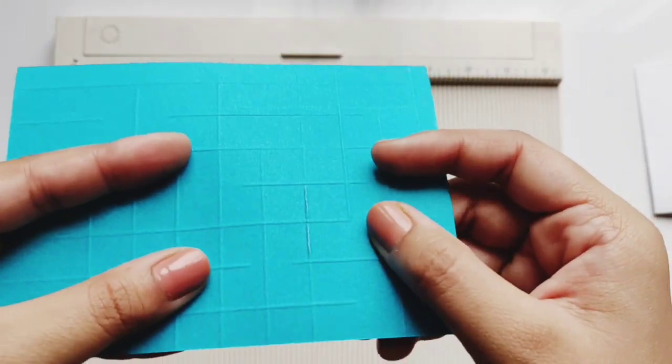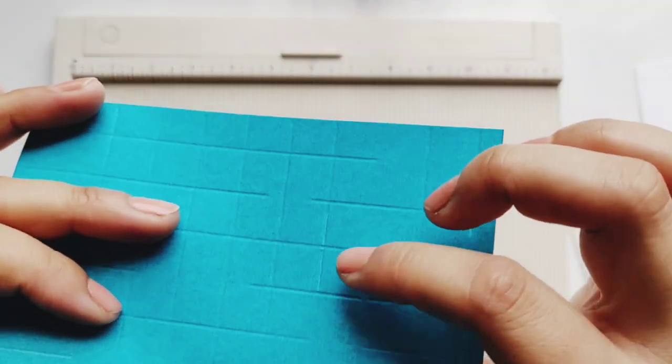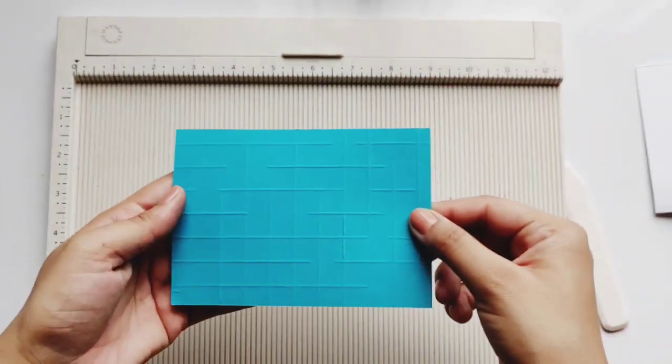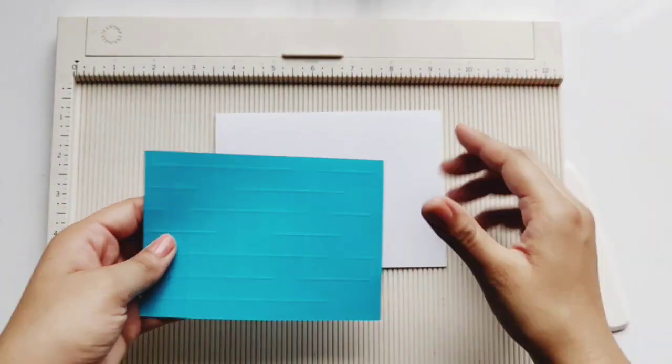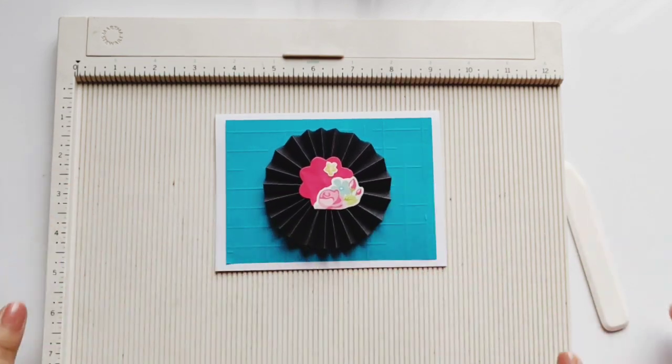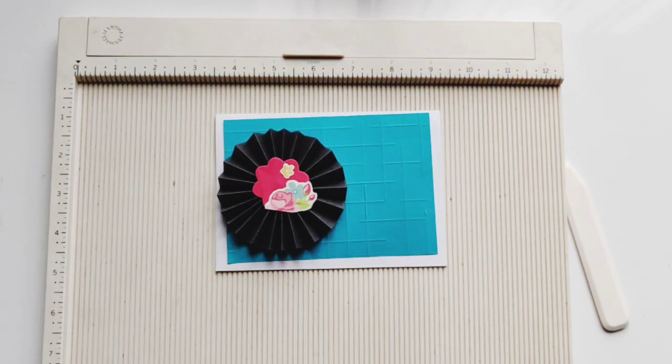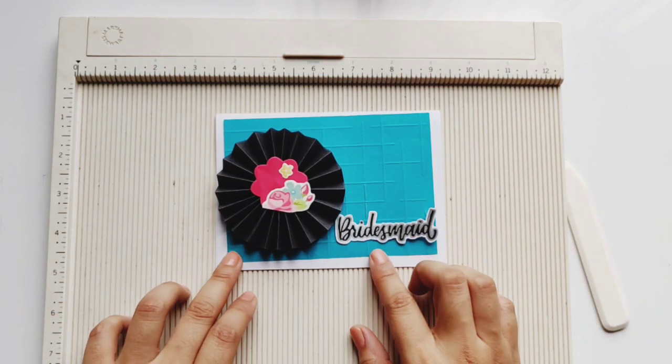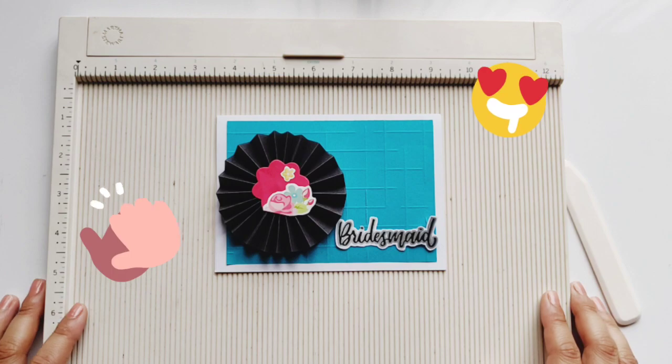Now you can layer it with embellishments and add more elements to your card like a sentiment and an embellishment to complete this look. So I'm using a rosette here and adding a sentiment from just a piece of paper that was lying around. So this completes the card.